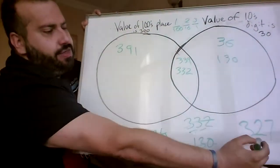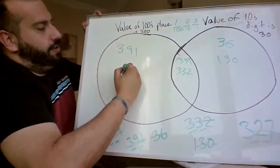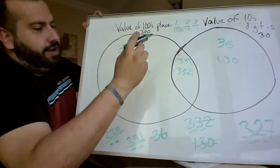And then last but not least, 327. We have a 3 in the 100s place, but not in the 10s place. We know it goes over here.